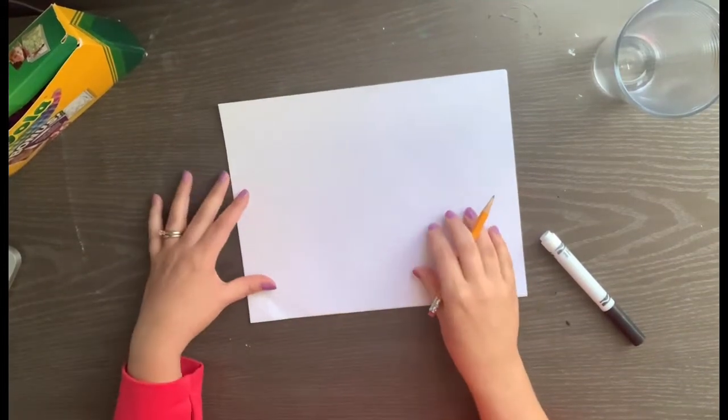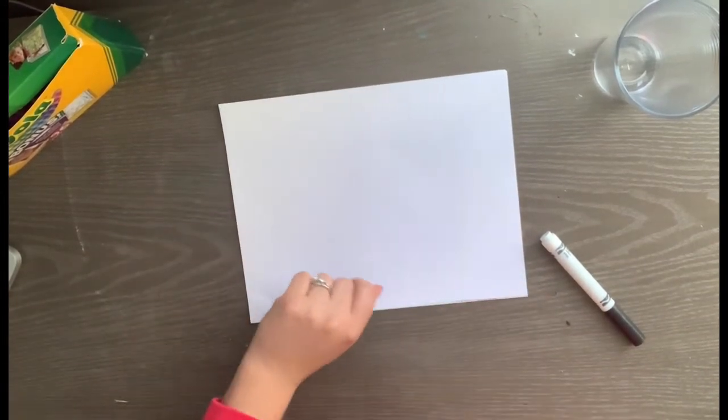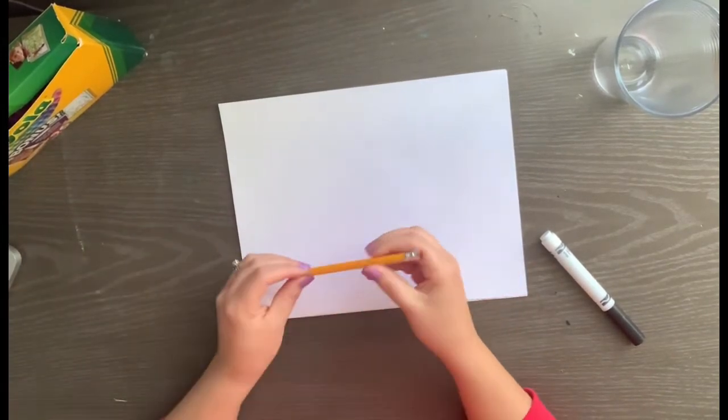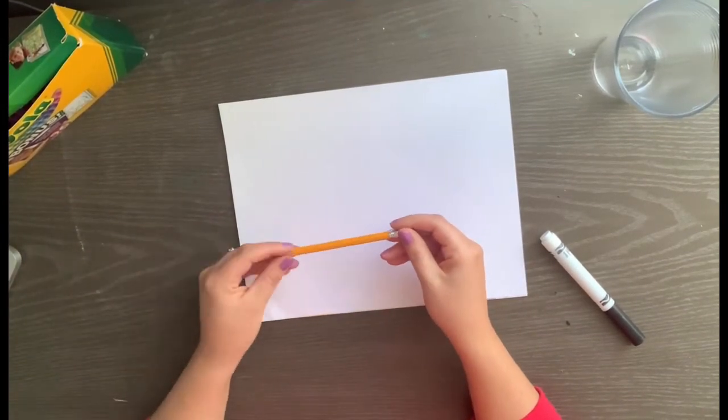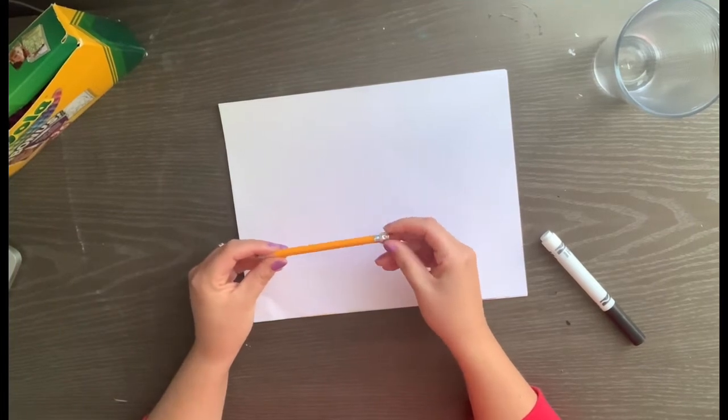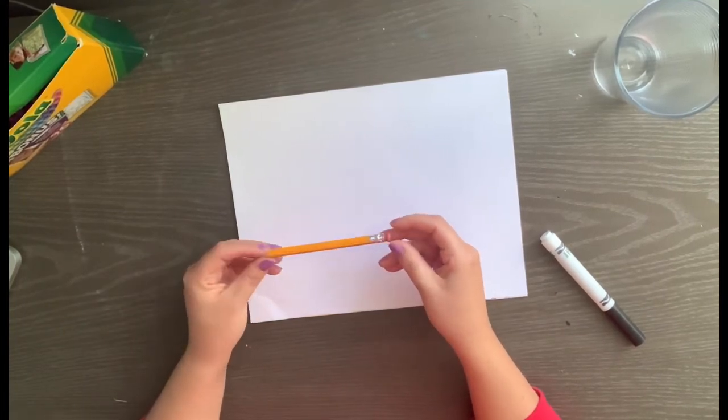So little owls, we are ready to get started on our geometric shape bats. The first thing we're going to do is get started on creating a background. We're going to use the geometric shape of a circle to draw the full moon.